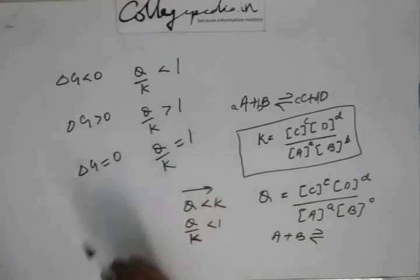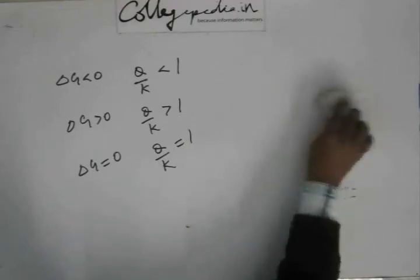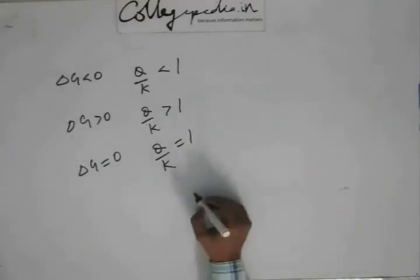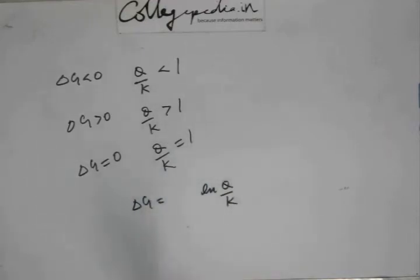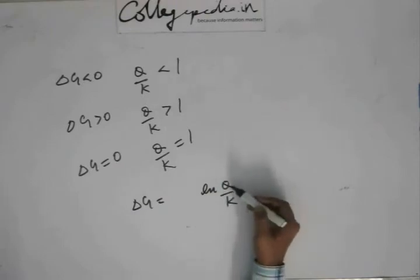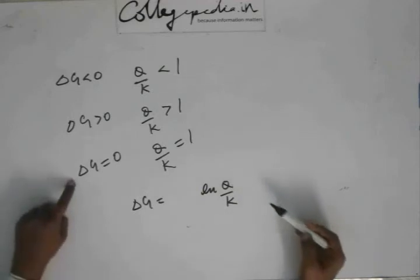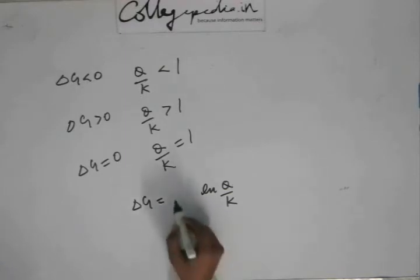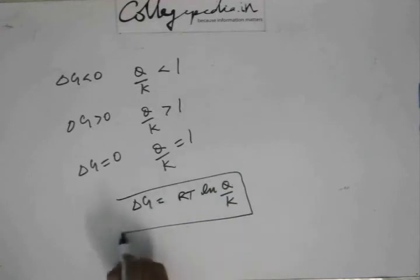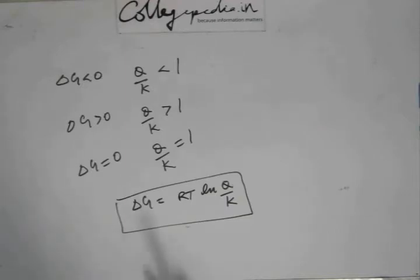When Q/K equals 1, ΔG is 0. To relate Q/K with ΔG mathematically, there must be a ln or log term in Q/K. When Q/K equals 1, ln(1) equals 0, so the right-hand side is 0 and ΔG is also 0 — the equality holds. Experimentally, it has been found that the constant is RT. Since Q and K give information about the direction of the reaction, and ΔG also gives that information, they are related through this expression.